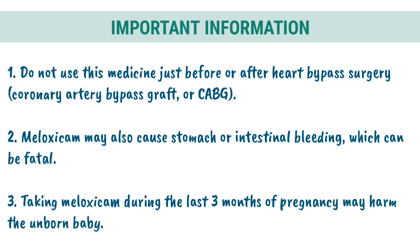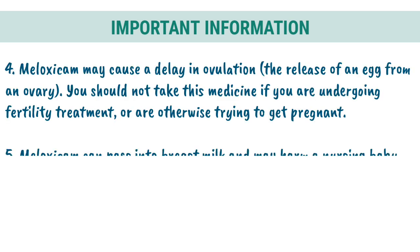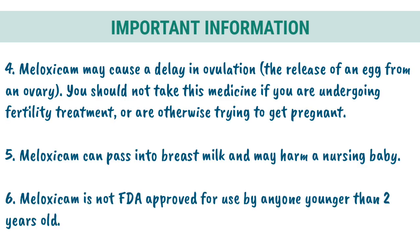3. Taking meloxicam during the last 3 months of pregnancy may harm the unborn baby. 4. Meloxicam may cause a delay in ovulation, the release of an egg from an ovary. You should not take this medicine if you are undergoing fertility treatment or are otherwise trying to get pregnant.